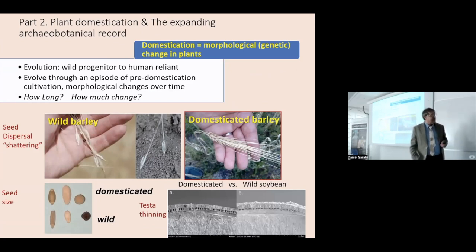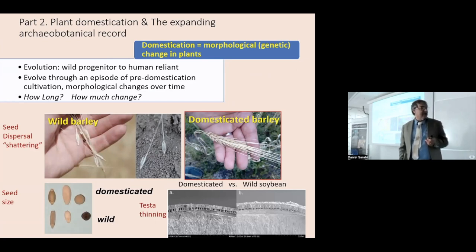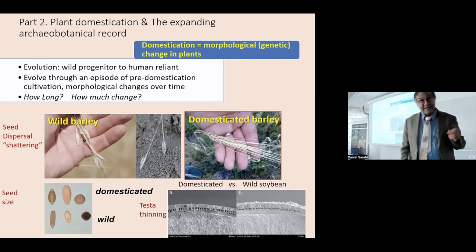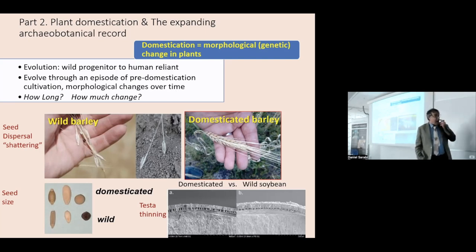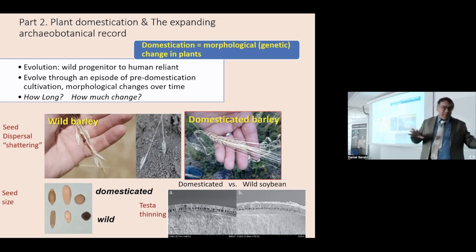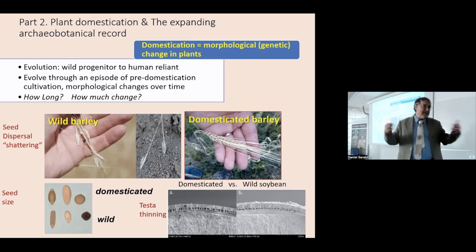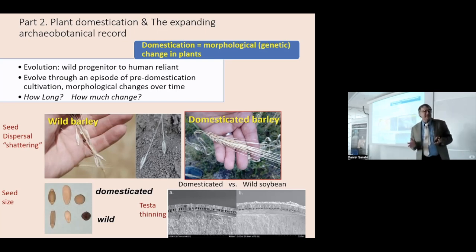So plant domestication and the expanding archaeobotanical record. When I finished my PhD in 2000, we sort of thought there were a few centers where plants were domesticated. Domestication happened very few times, it happened very rapidly — it was kind of a non-question.